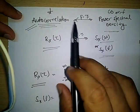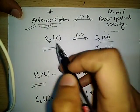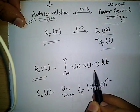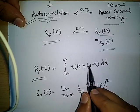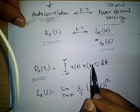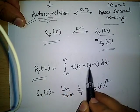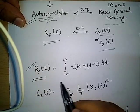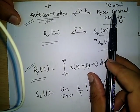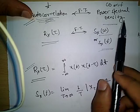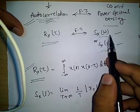Power spectral density is nothing but the Fourier transform of the autocorrelation function. The autocorrelation function is given by R_x(τ) = integral from minus infinity to infinity of x(t)·x(t − τ) dt. What this function shows is the relation of a signal with itself when there is a time delay τ. This is a time-domain function, and its Fourier transform, which is in the frequency domain, is the power spectral density S_x(ω) or S_x(f).